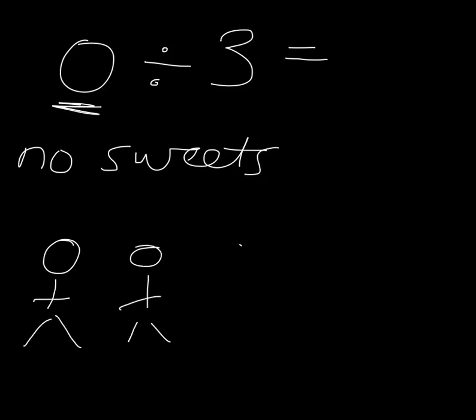Very keen to have some sweets, but I have no sweets. So how many will I give each child? Well, I'm afraid, because I've got no sweets, I can't give any sweets to the children, and so 0 divided by 3 will be 0.